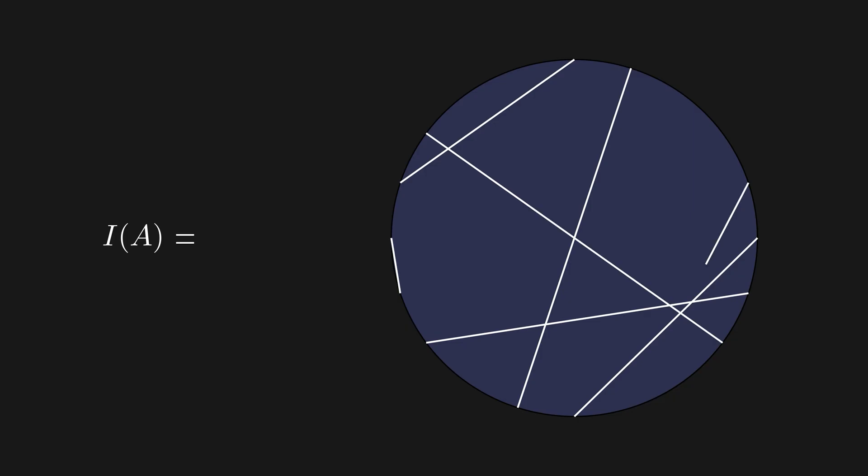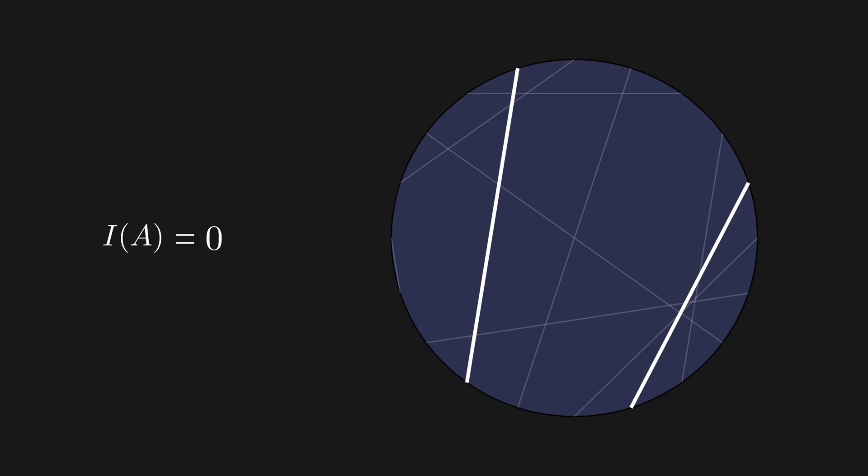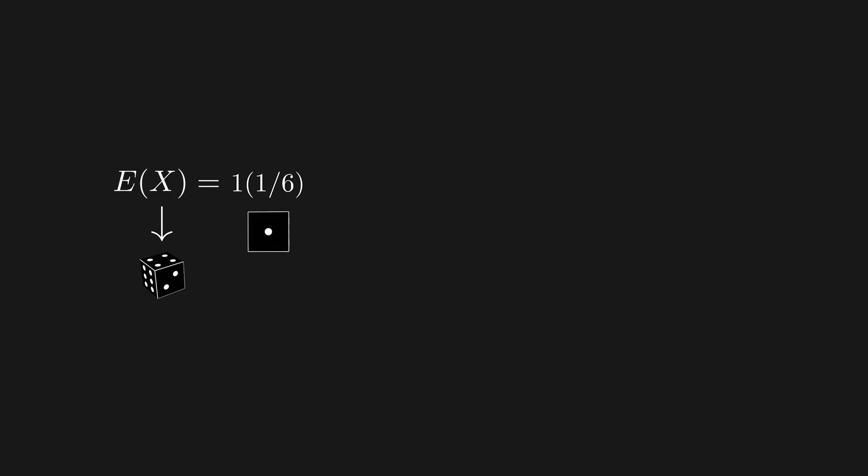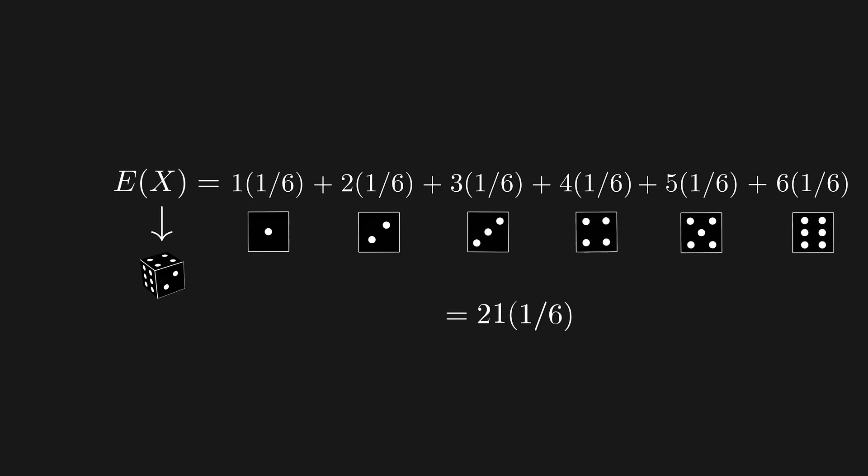The next thing we need is to find the expected value of this random variable. Expected value is just a weighted sum of each possible outcome weighted by its probability of occurring. For example, suppose we wanted to know the expected value of a dice roll. We sum up each outcome multiplied by its probability of occurring. And this works out to be 7 over 2. So the expected value of an indicator random variable is just 1 times the probability of its event, plus 0 times the probability of the event's complement, in other words, the event not occurring. This simplifies to just the probability of the event.